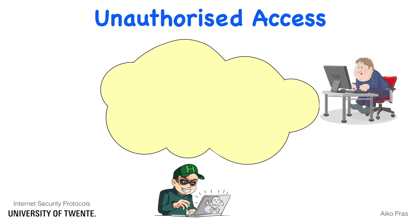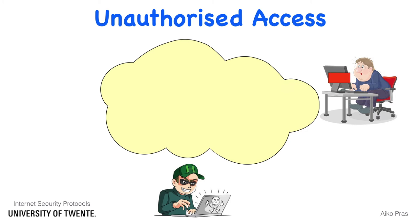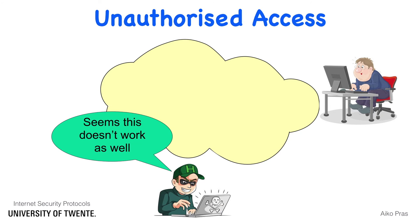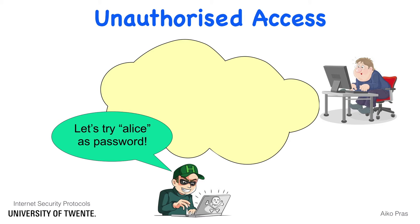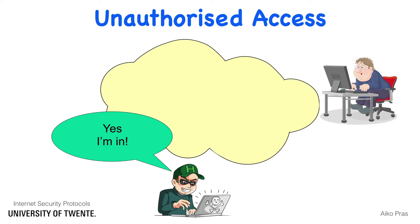The attacker may now try another password, for example ABCDE. The second login attempt is also sent to Bob, but since ABCDE is also incorrect, an error message is returned again. The attacker knows that ABCDE is also incorrect and may now try Alice as password. The third login attempt is sent to Bob, but this time the attacker guessed the right password and the welcome message is returned. The attacker has now gained access to Bob's system by guessing a number of passwords.